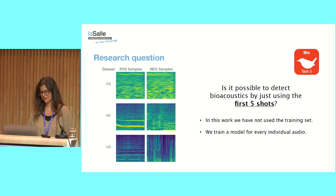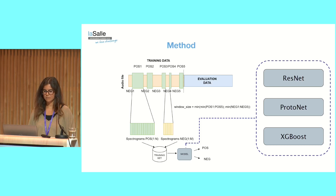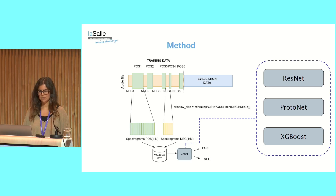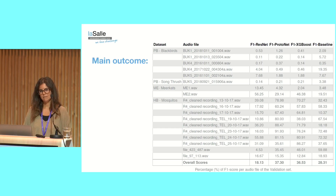What we did was train an individual model for every audio file in the validation set. The process involved obtaining the first five shots of the species and the silence between them as a binary detection problem. We selected the smallest window duration, as animals can vocalize with different types of vocalizations. We windowed both the silence and the vocalization to obtain our training set, and trained three different models: a ResNet, a ProtoNet, and an XGBoost using a prototypical loss. We then evaluated the rest of the audio file and obtained one metric per audio file for per-file and per-dataset analysis.